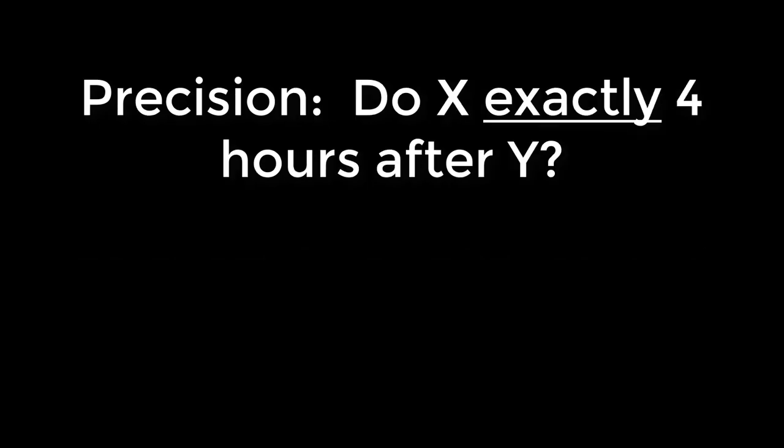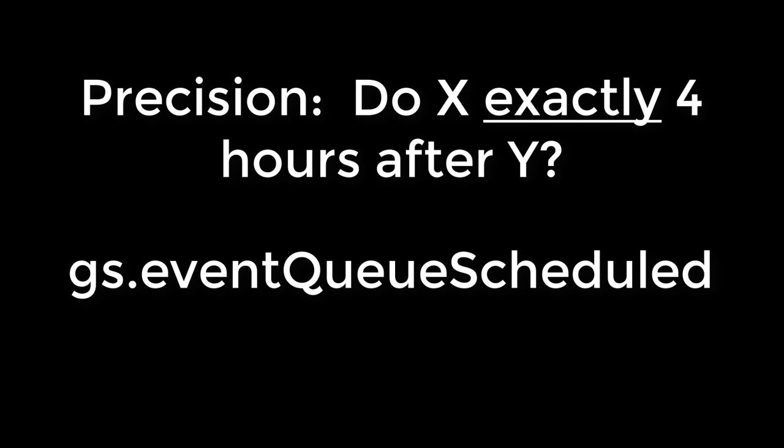Precision: let's say you want something to happen exactly four hours after something else. How is a scheduled job going to help you, since it runs on fixed time intervals? With event queue scheduled, you can guarantee that the event processes on whatever precise date you want, down to the millisecond.